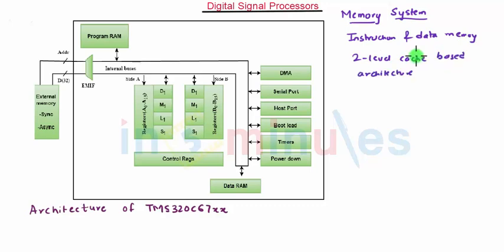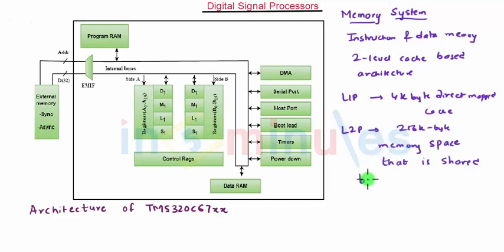The level 1 program cache that is L1P is a 4K byte direct map cache and L2P that is the level 2 programmable cache consists of 256 KB memory space that is shared between program and data space. Now let us see the peripherals of this digital signal processor.